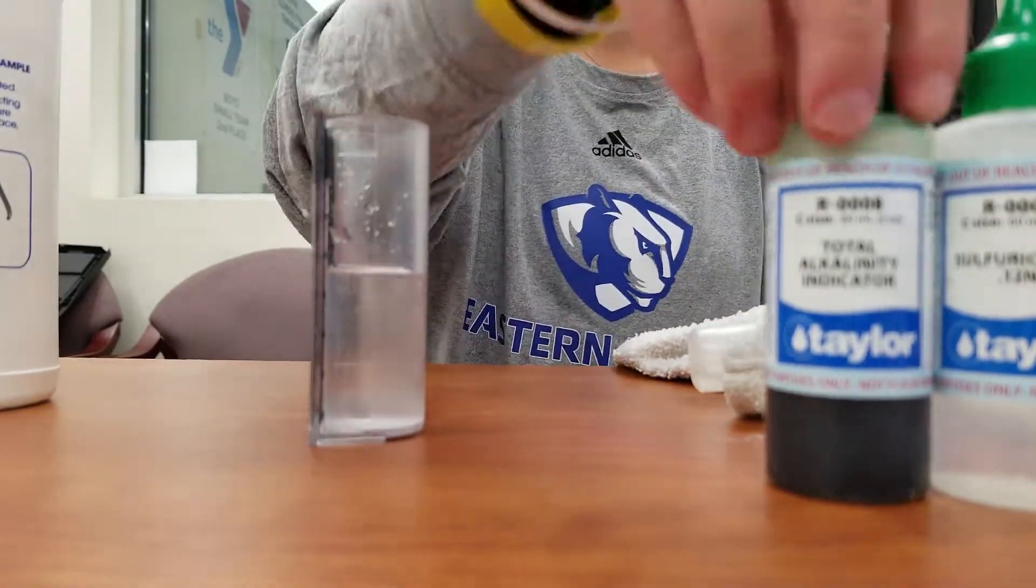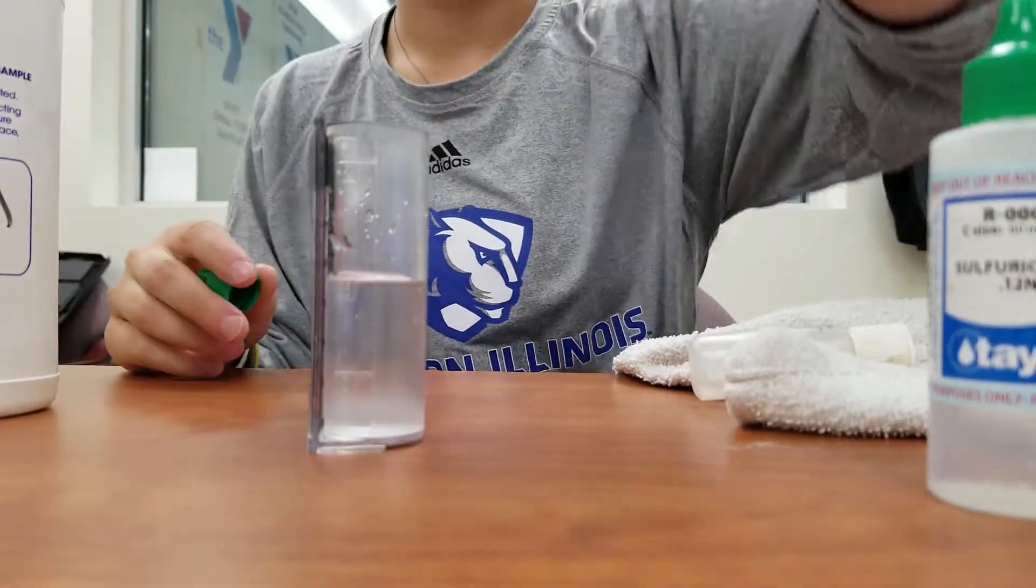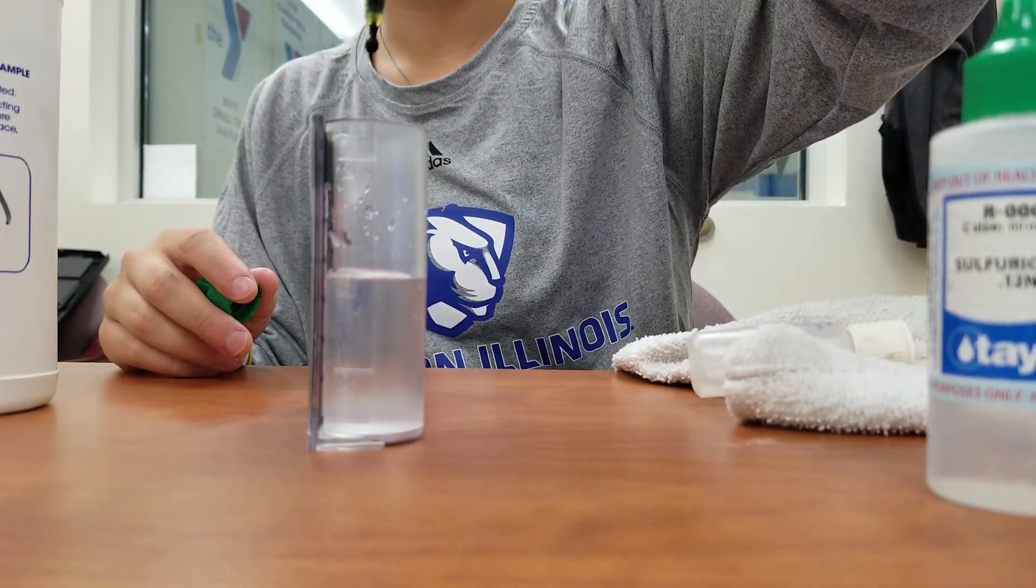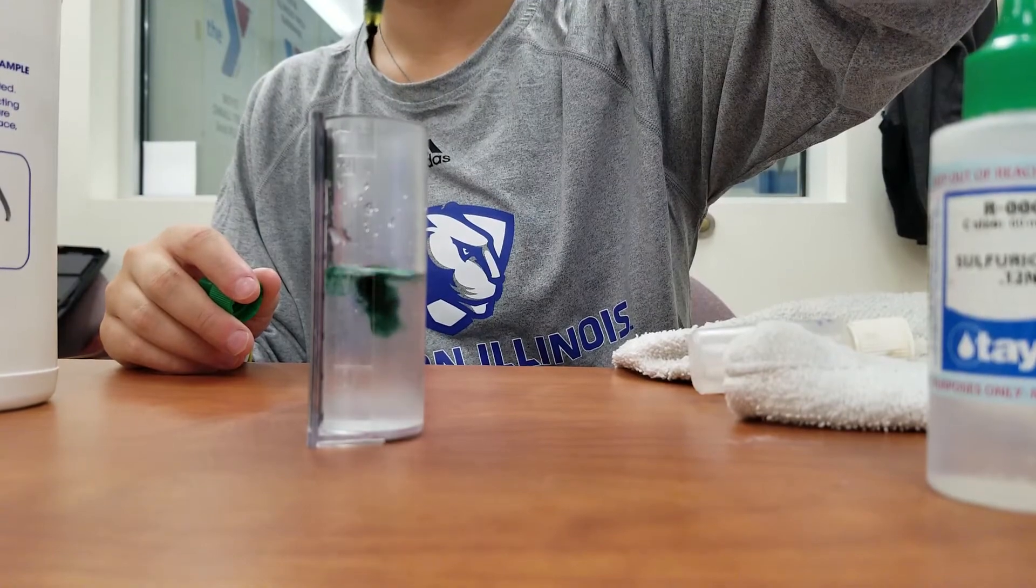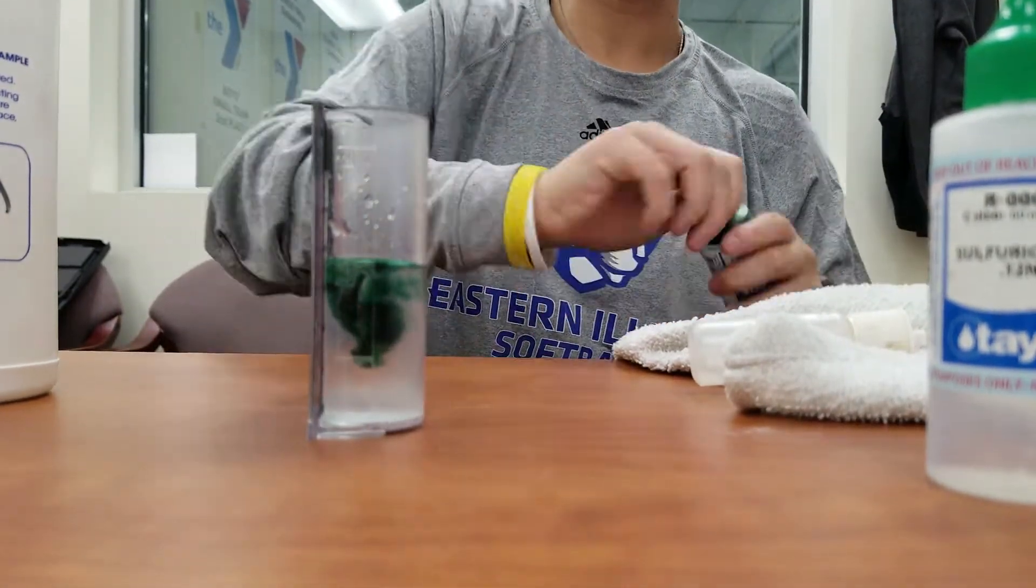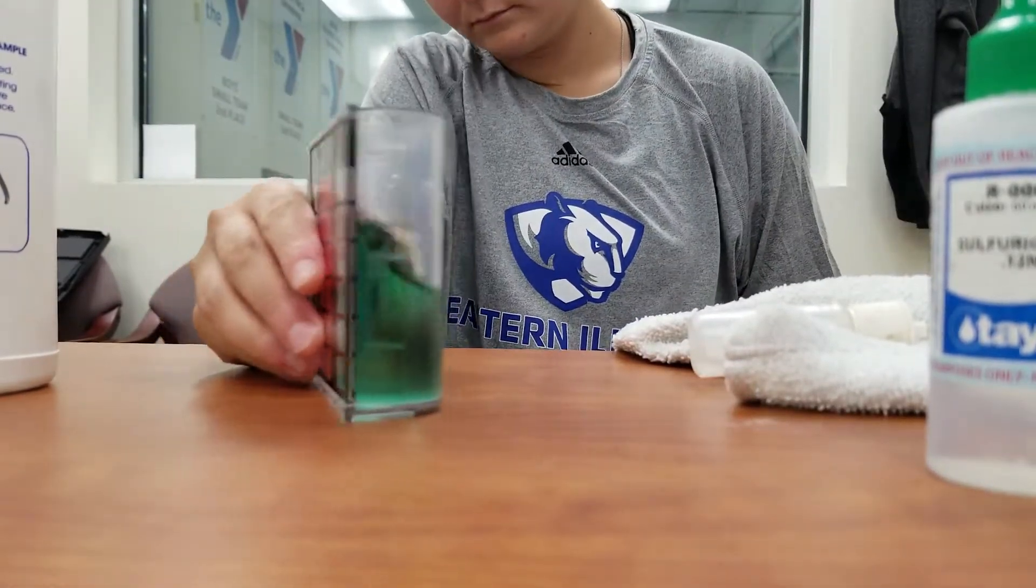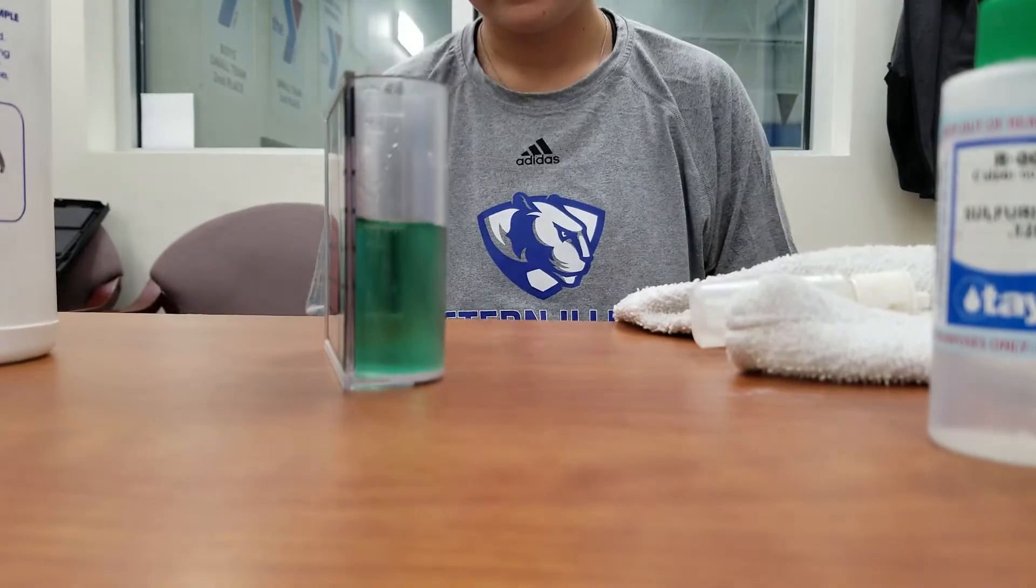Now we're going to add five drops of R008. You should see a color change here. So now we've got that in there. We're going to swirl it around and mix it up until you get all that dye pretty well mixed up.